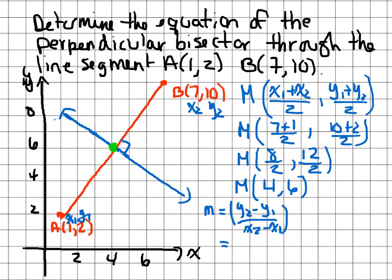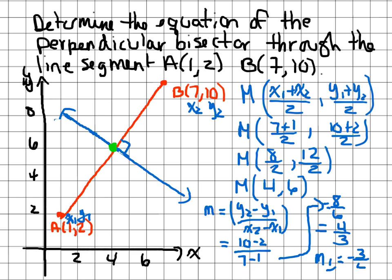Slope of AB = (y2 - y1)/(x2 - x1) = (10 - 2)/(7 - 1) = 8/6 = 4/3. The perpendicular slope is the negative reciprocal: -3/4. Looking at the graph and extending the line, I'm expecting the y-intercept to be around 9, but we need to confirm that by finishing the calculations.